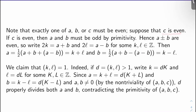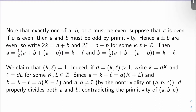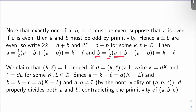Suppose initially that C is even; I'll remark on what to do in any other case in a moment. If C is even, A and B must be odd by primitivity. Hence A plus or minus B are even, so we can write 2K equals A plus B and 2L equals A minus B for some integers K and L. Notice that A equals K plus L and B equals K minus L.